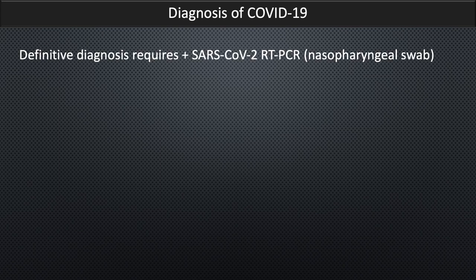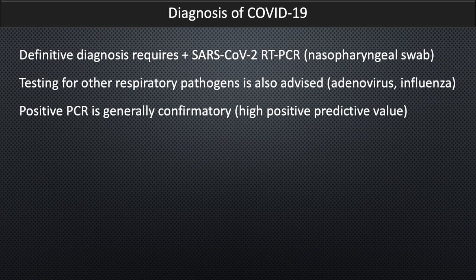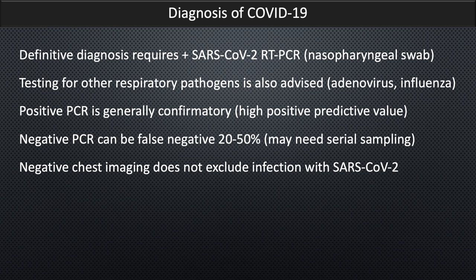Diagnosis of COVID-19. Definitive diagnosis requires a positive reverse transcription PCR test for the virus SARS-CoV-2, utilizing a nasopharyngeal swab specimen. Testing for other respiratory pathogens is also advised when available, including adenovirus and influenza. A positive PCR is generally confirmatory and has a very high positive predictive value for COVID-19. Nonetheless, a negative PCR can be a false negative in 20 to 50% of patients. Therefore, in high pre-test probability and high level of clinical suspicion, serial sampling may be needed. Negative chest imaging does not exclude infection of SARS-CoV-2, especially if imaging is obtained early in the disease clinical course. That's very important to emphasize.